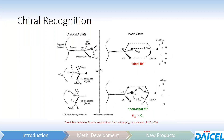In reality, it's a little more complicated because everything is going to be solvated by the mobile phase — both the selector as well as the analytes. In the ideal fit, you'll have some solvent exclusion; in the non-ideal fit, you'll have some solvation that still occurs. This matters because the solvation status of different functional groups can result in different separations —